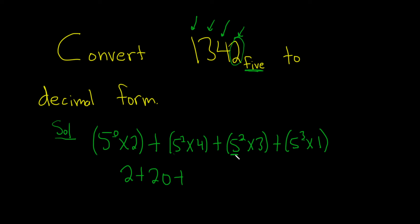This is 25 times 3, so 75. And this is 125 times 1, so 125. So I'm just going to type this in: 2 plus 20 plus 75 plus 125.